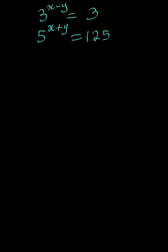So we have 3 to the power of x minus y is equal to 3, and also 5 to the power of x plus y is equal to 125. And we need to find independently the values of x and y.